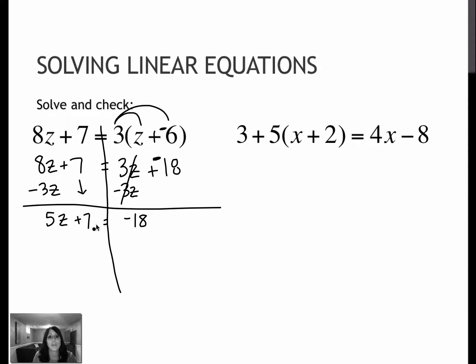Now I need to get z by itself. I need to get 5z by itself first. So I have to get rid of plus 7 by subtracting. And remember, whenever I subtract, I can always keep flip change. So really, I have a negative 18 plus a negative 7, which is a negative 25. I need to get z by itself now, so I get rid of that times 5 by dividing by 5. And z turns out to be negative 5.